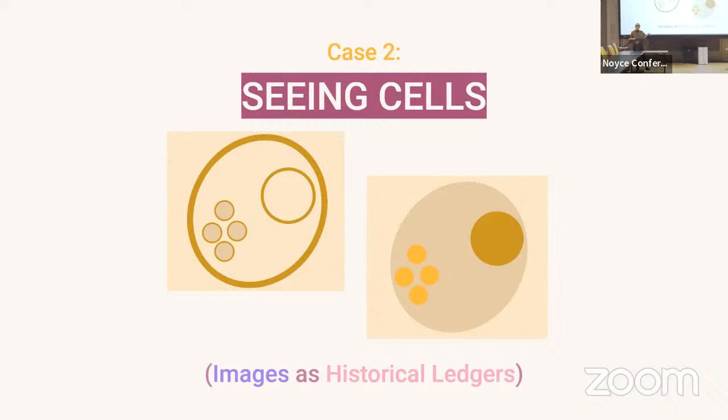The next case, 'Seeing Cells,' is in some ways a prequel to the first. The scientists we were working with held clear conceptual patterns about what cells look like, patterns inherited from somewhere — likely from images of cells encountered at some earlier point. This must be the case because for the first few centuries of the cell concept it was only documented through images. Taken together, those images can tell us more about the evolution of that knowledge system.